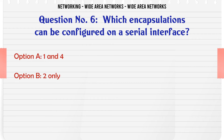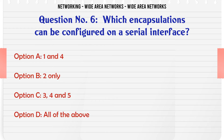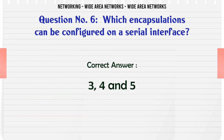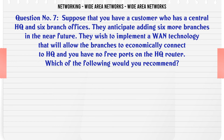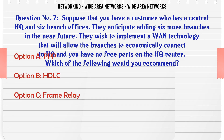Which encapsulations can be configured on a serial interface? A. 1 and 4. B. 2 only. C. 3, 4, and 5. D. All of the above. The correct answer is C: 3, 4, and 5.